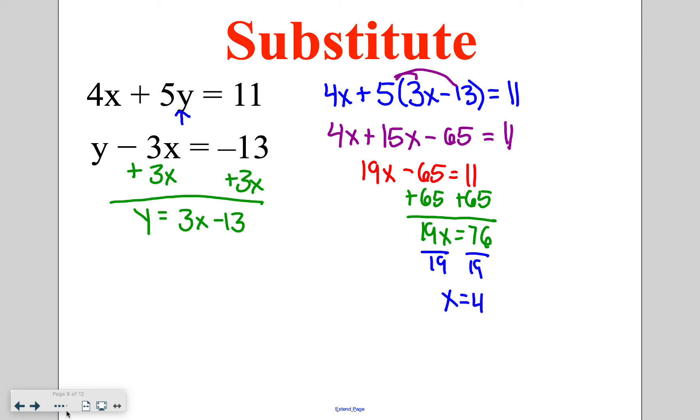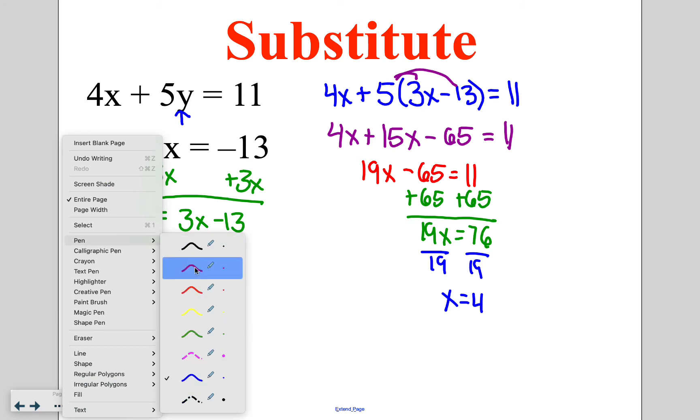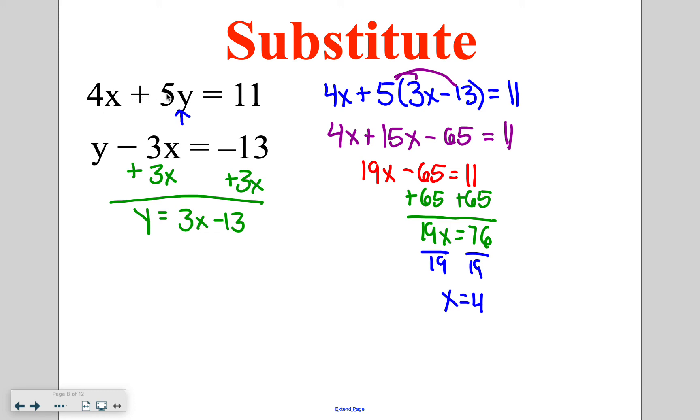Now I need to plug this back in. I need to plug it into one of the two original equations. So I want to go either into 4x plus 5y is equal to 11, or y minus 3x is equal to negative 13. I'm going to go ahead and plug it into the first one, giving me 4 times 4 plus 5y is equal to 11. 4 times 4 is going to give me 16 plus 5y equals 11. Subtracting 16 on both sides of my equation, I end up with 5y is equal to negative 5.